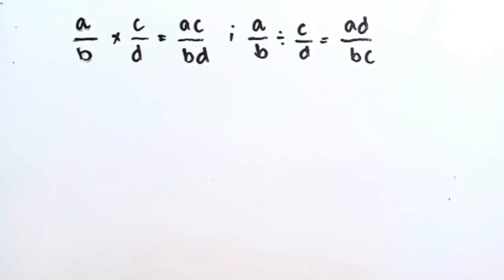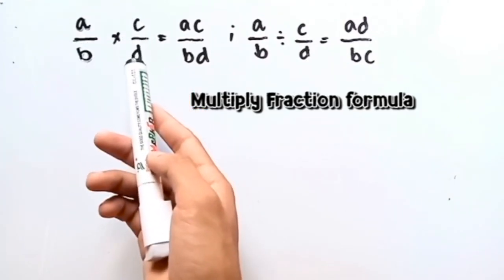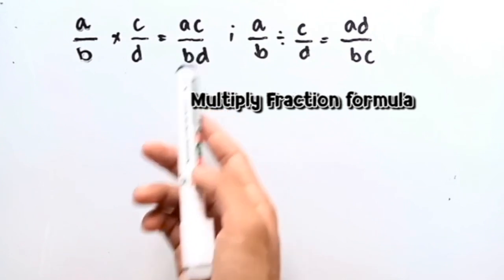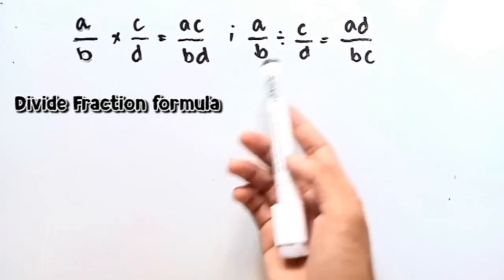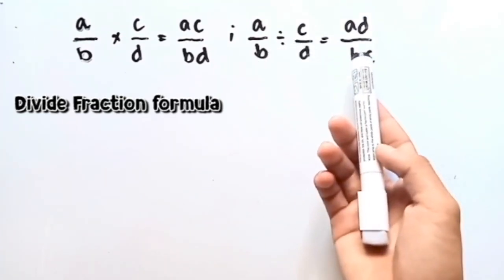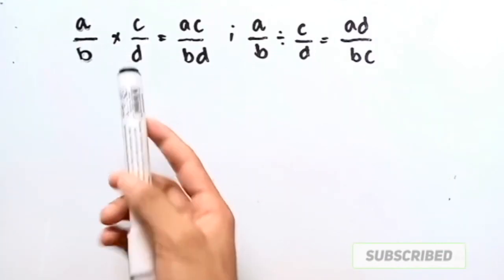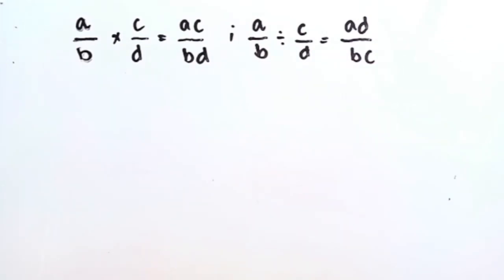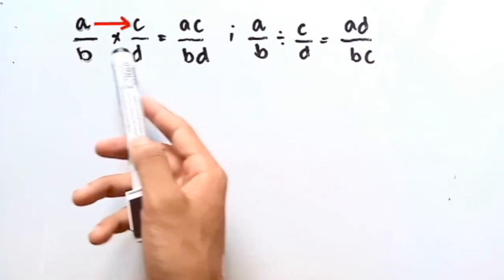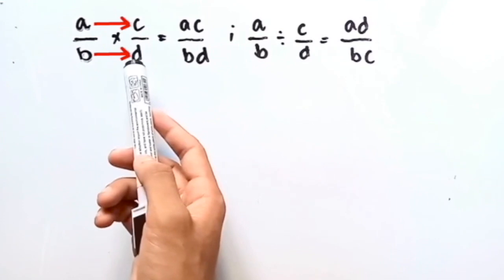So the formula for multiplying fractions is here. A over B times C over D is equal to AC over BD. So if you're going to multiply fractions, just multiply the numerator, which is A times C, so this is equal to AC, then B times D is equal to BD.